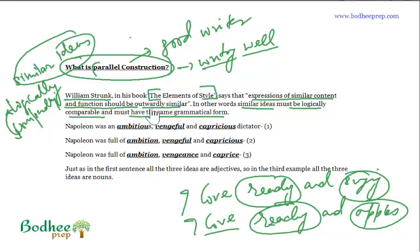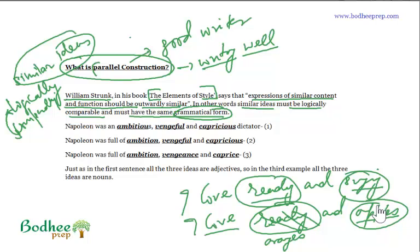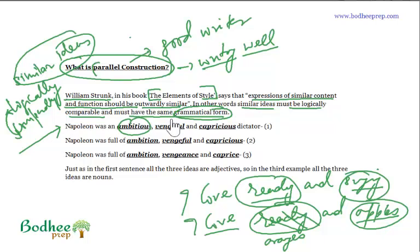Secondly, they must be in the same grammatical form. 'Reading' and 'singing' are both gerunds. If I replace reading with oranges, it becomes 'I love oranges and apples' — again, both are nouns. So to recap: parallel construction means similar ideas must be logically comparable and they must be in the same grammatical form. Let's take examples to clear the concept. Napoleon was an ambitious, vengeful, and capricious dictator.